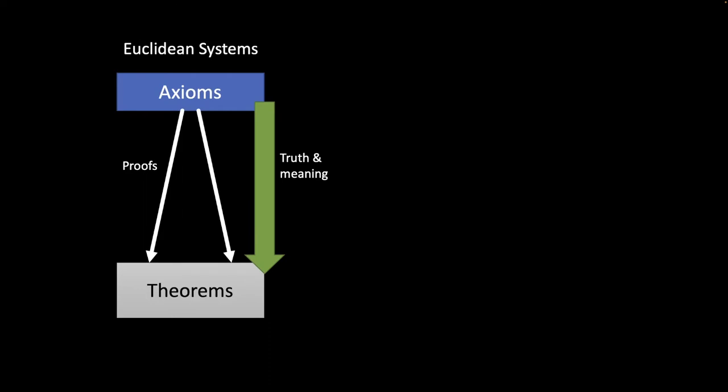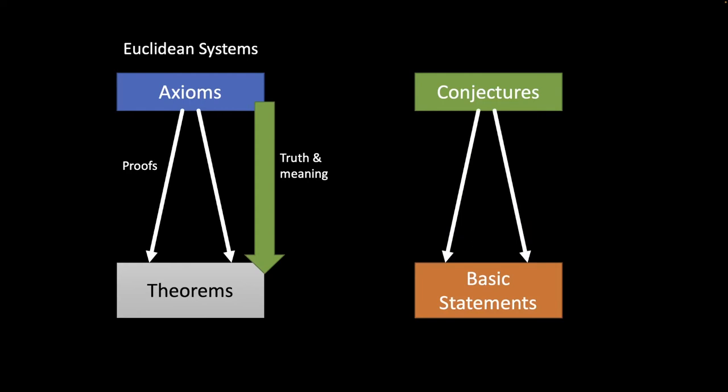Lakatos wants to contrast this with a different way of thinking about mathematics in which your sort of broad general statements are not so much axioms as conjectures. A variety of conjectured or hypothesized sort of general formal laws. There's still a place for proof. The proof helps us derive more basic statements from those conjectures, but the form of proof may not be so much a straightforward deduction is more like a thought experiment.